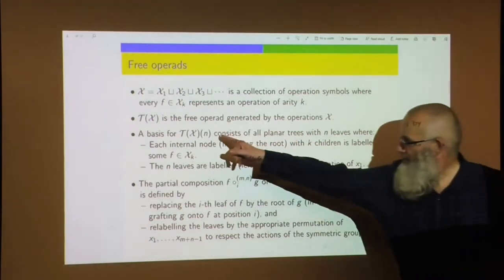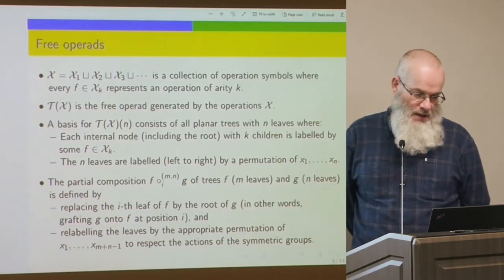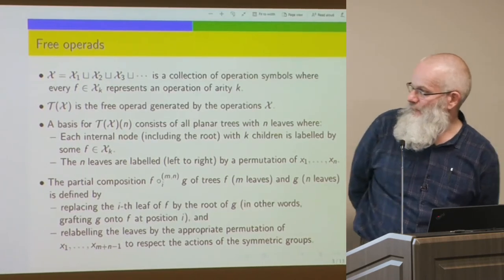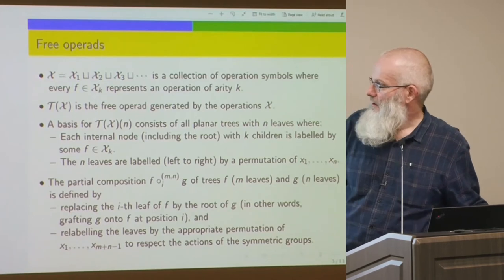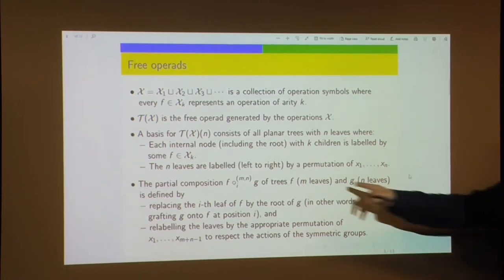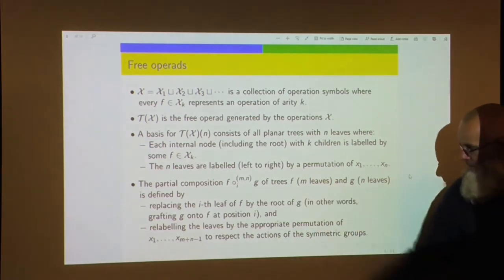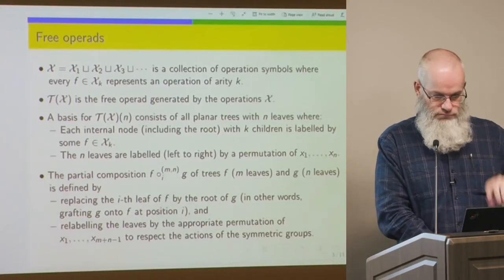A basis for the set of n-ary operations — the vector space of n-ary operations — consists of all planar trees with n leaves, where each internal node with k children is labeled by some f in X_k. Each internal node represents the k-ary operation combining the outputs of its k children. The partial composition of trees corresponds to grafting the root of one tree onto a leaf of another.